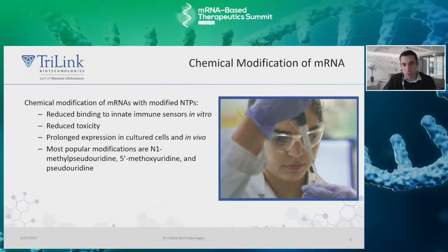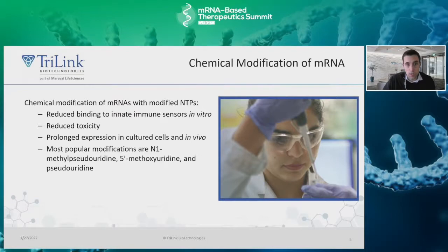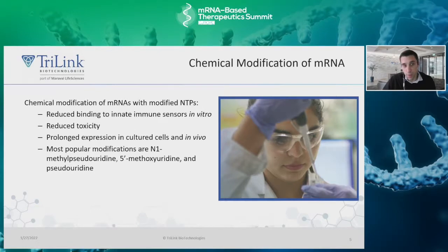The most popular modified uridines are N1-methyl-pseudouridine, currently used in both mRNA COVID-19 vaccines, 5-methoxyuridine, and pseudouridine. Each can provide therapeutic benefits, but the most well-used and effective has proven to be N1-methyl-pseudouridine. The capping reaction is also absolutely necessary, as uncapped mRNA has a 5' triphosphate group present that may stimulate the immune response leading to degradation, and uncapped mRNAs will not bind properly to the ribosome, inhibiting protein production.